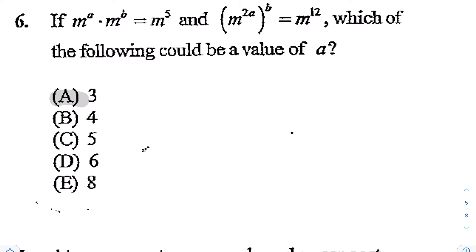Alright, next for question number 6: if m raised to the a power times m raised to the b power equals m raised to the 5th power, and m raised to the 2a power raised to the b power equals m to the 12th power, which could be the values...